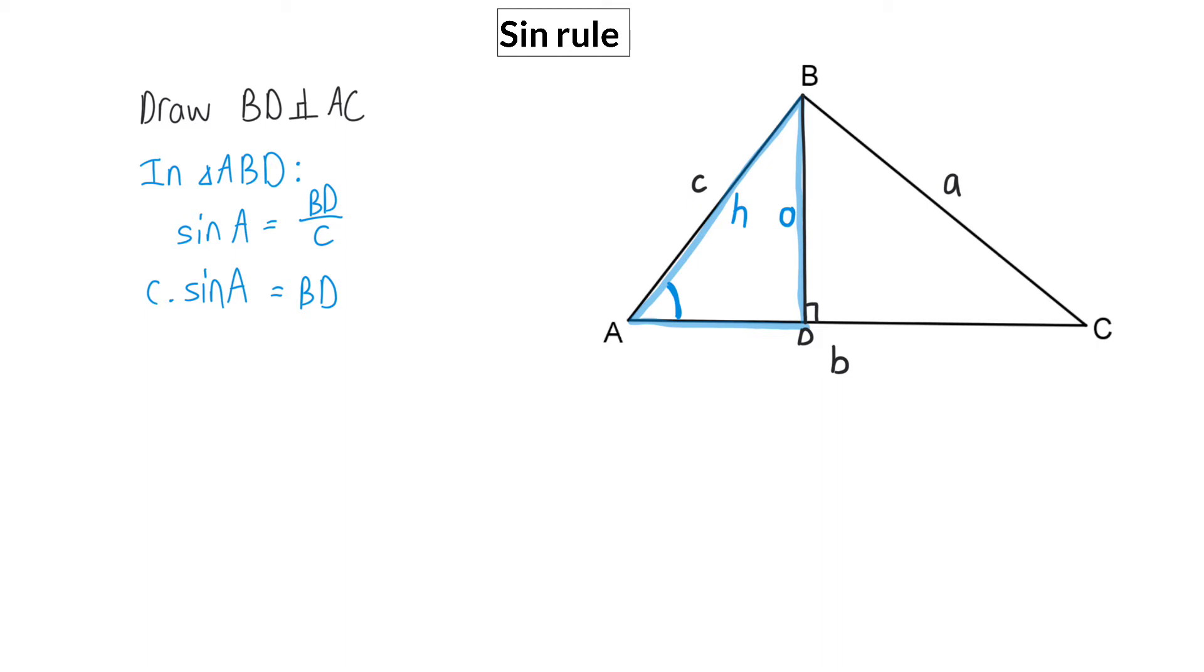Next, I'm going to do the same thing in triangle BCD. So here I'm going to determine sin of angle C and once again that is opposite over hypotenuse. So this means I will have sin of angle C is equal to BD over BC, which is small a. Once again, I'm going to get BD alone on the right by multiplying with A on the left hand side. Here I've now formed two equations and in both of them, the right hand side is BD. That means I can make the conclusion that the two left hand sides will also be equal. Therefore, C times sin of A is equal to A times sin of C.